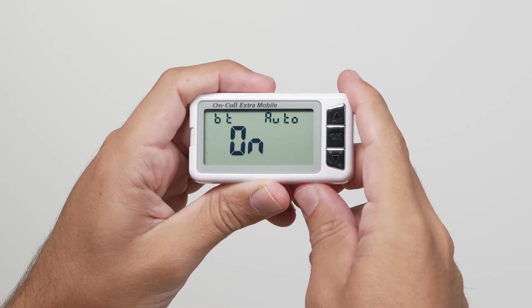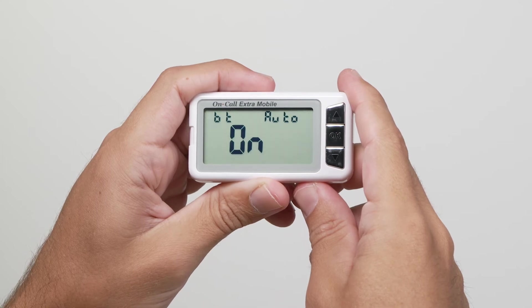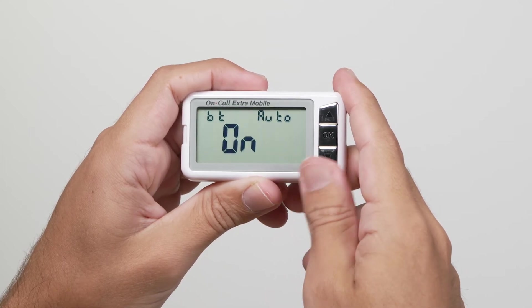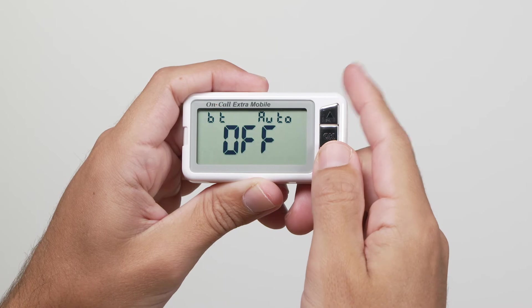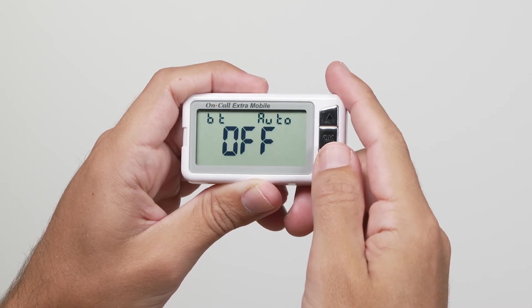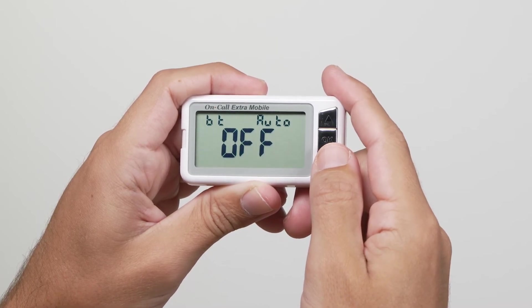Press the up arrow or down arrow button to select whether data is automatically sent to the default paired device after each test. The words BT-AUTO-ON or BT-AUTO-OFF will be shown on the display.